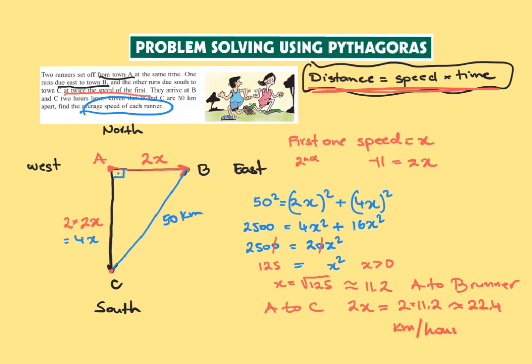So I'm just going to include here the units are kilometers per hour. We have calculated the average speed of each runner. Just to wrap it up, the average speed of the runner running from A to B is 11.2 kilometers per hour, and from A to C is 22.4 kilometers per hour.